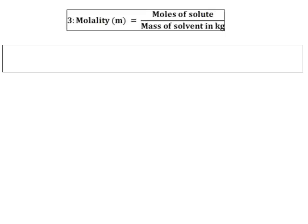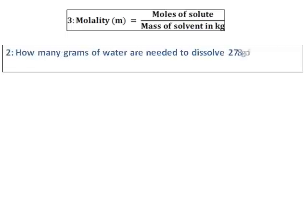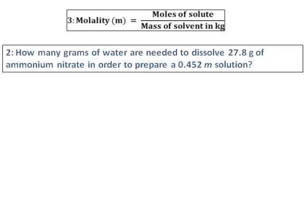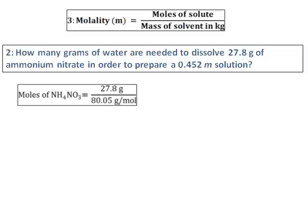We will do one more question on molality. How many grams of water are needed to dissolve 27.8 grams of ammonium nitrate in order to prepare a 0.452 molal solution? Molality is given and the grams of solute is given. We will first calculate the moles of ammonium nitrate — the solute. Moles of ammonium nitrate equals mass of ammonium nitrate divided by the molar mass.